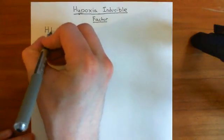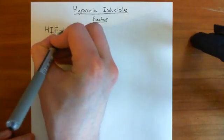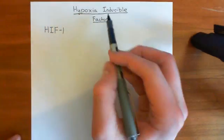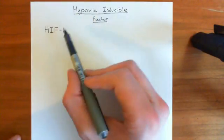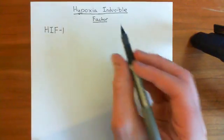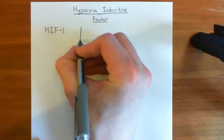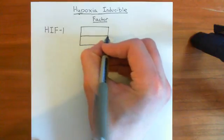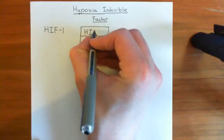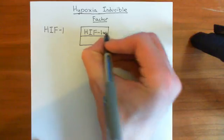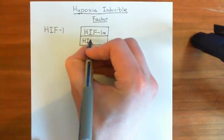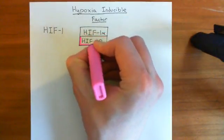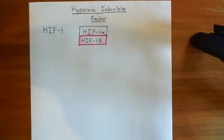The hypoxia-inducible factor we're going to talk about is hypoxia-inducible factor 1 — it's the main one. For short, hypoxia-inducible factor is denoted HIF. If someone talks about hypoxia-inducible factor without clarifying the number afterwards, you can assume they're talking about HIF1. It's actually a heterodimer — made up of two separate proteins dimerised together: HIF1 alpha and HIF1 beta. So this dimer of two different protein types is the structure of hypoxia-inducible factor 1.